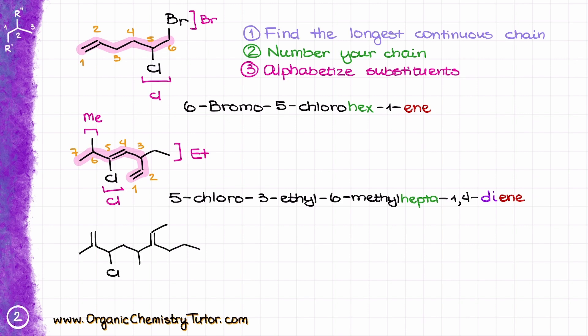Here is another example — take a few moments to work through it on your own, then check with me. Step one: find the longest continuous chain containing the maximum number of double bonds. That is this chain here, so that is my parent. Step two: number it to give the lowest possible numbers to my double bonds, which means 1, 2, 3, 4, 5, 6, 7, and 8 — so it's going to be some sort of octadiene.